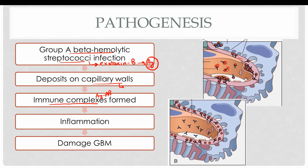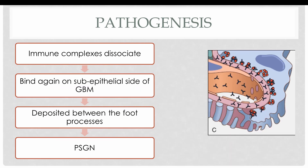These antigen-antibody complexes damage the glomerular basement membrane. Once the glomerular basement membrane is damaged, the immune complexes dissociate into their respective antigens and antibodies, which are then transported across the glomerular basement membrane and bind again on the sub-epithelial side of the glomerular basement membrane.